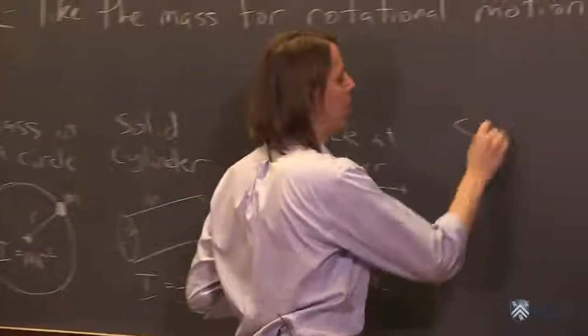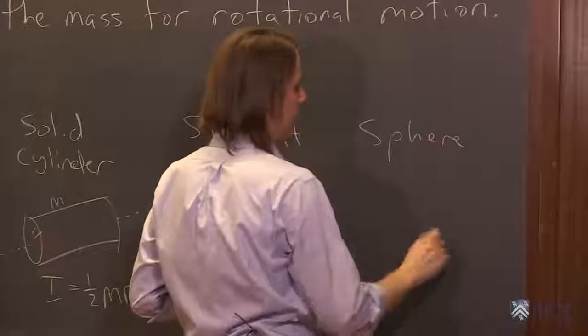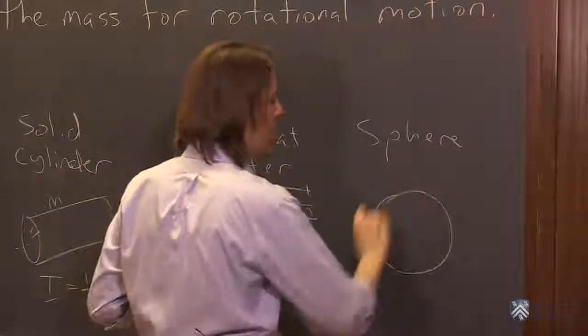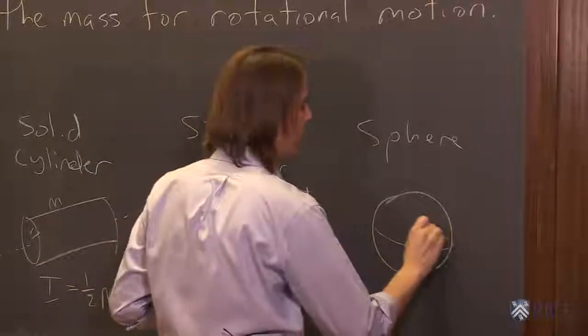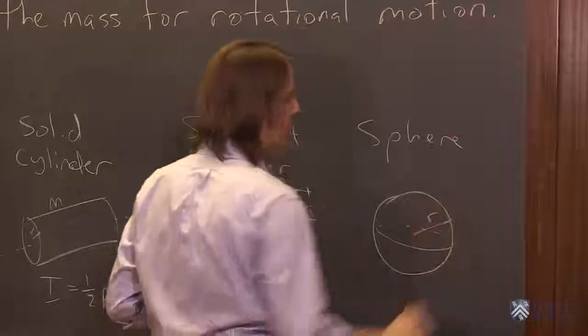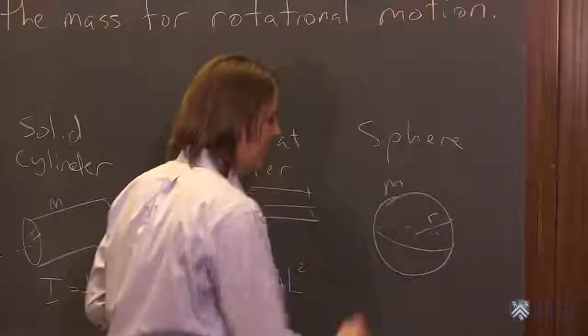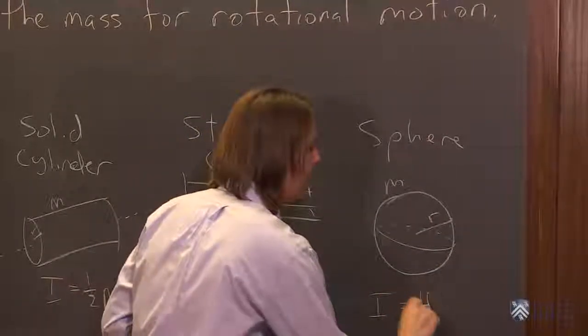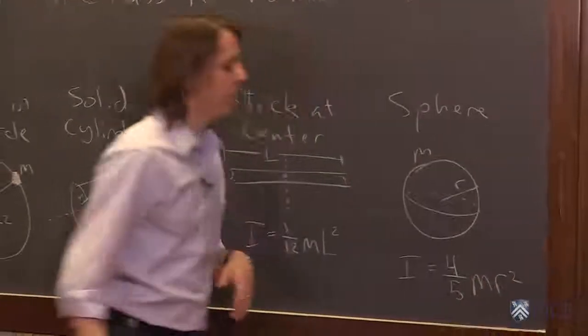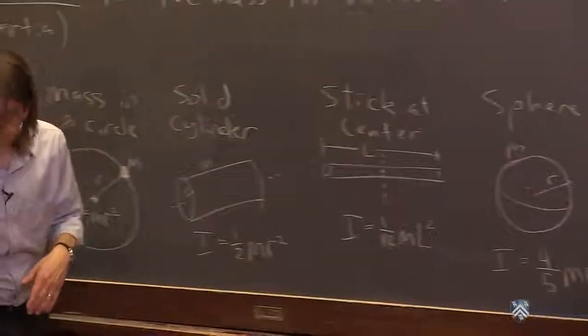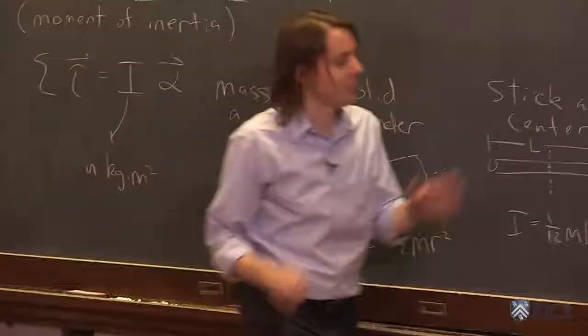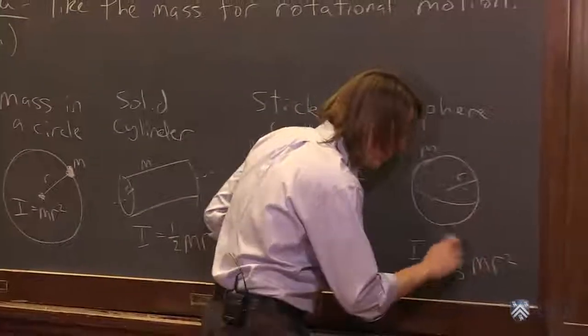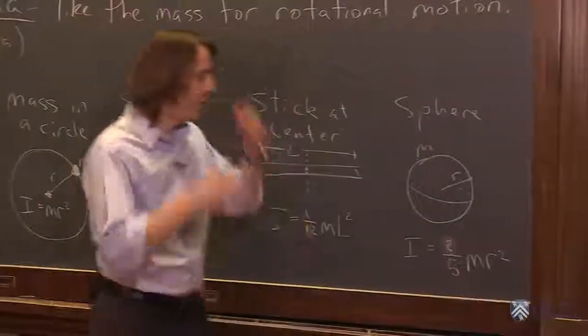How about a sphere? We have a sphere, kind of like that. We give it a radius R, give it a total mass M. Its I, I believe it's four-fifths MR². Four-fifths, yes. Oh no, two-fifths, sorry. Two-fifths. I don't have them all memorized. Two-fifths MR².